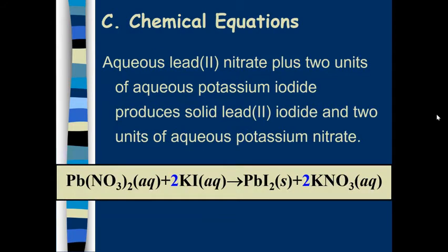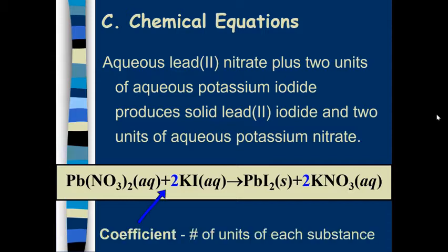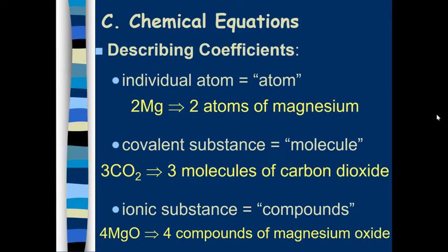Okay, this is like a written out chemical equation. Aqueous lead two nitrate plus two units of aqueous potassium iodide produces solid lead iodide and two units of aqueous potassium nitrate. The coefficient, which is the number in front, represents the number of units of each substance. So we have different ways of talking about these coefficients. When they're individual atoms, we just use the word atom. So when it's just 2Mg, we could say two atoms of magnesium. That's an example.